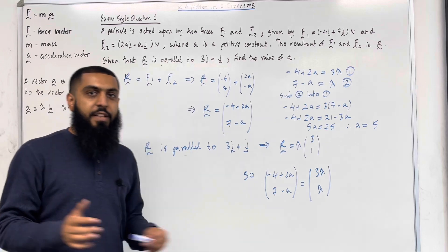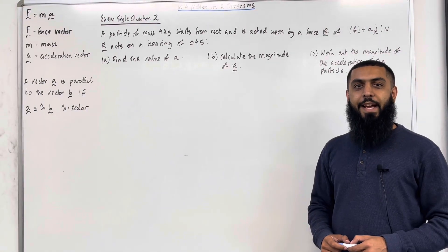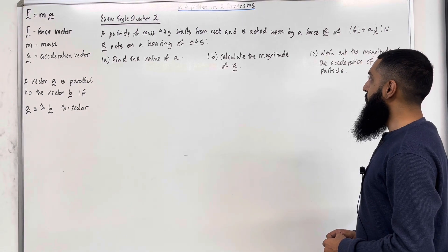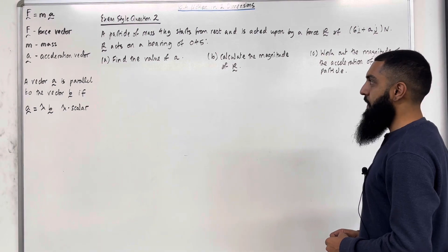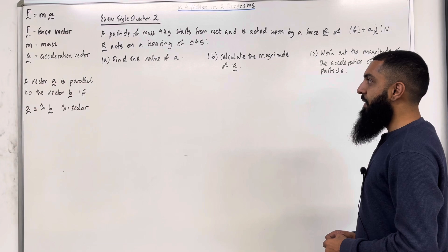That completes exam style question 1. Moving on to exam style question 2. A particle of mass 4 kg starts from rest and is acted upon by a force R of 6i plus aj newtons. R acts on a bearing of 45 degrees. Part A finds the value of A.